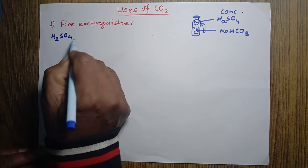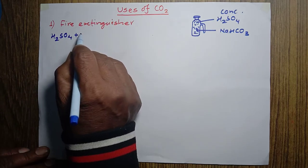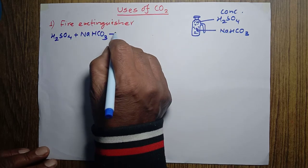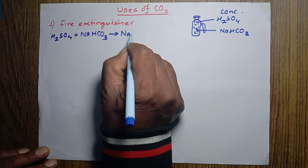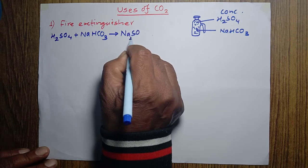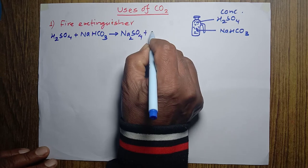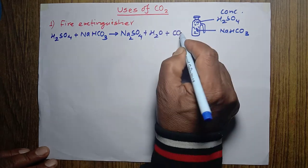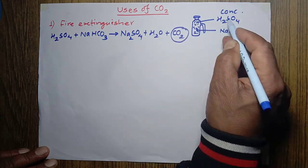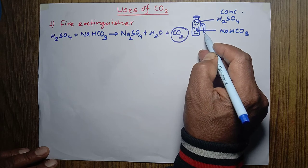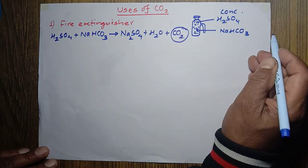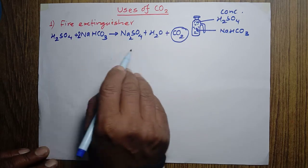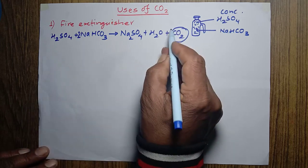When sulfuric acid reacts with sodium bicarbonate (NaHCO3), the products formed are sodium sulfate, water, and carbon dioxide gas. We can balance this equation: 2NaHCO3 + H2SO4 → Na2SO4 + 2H2O + 2CO2.